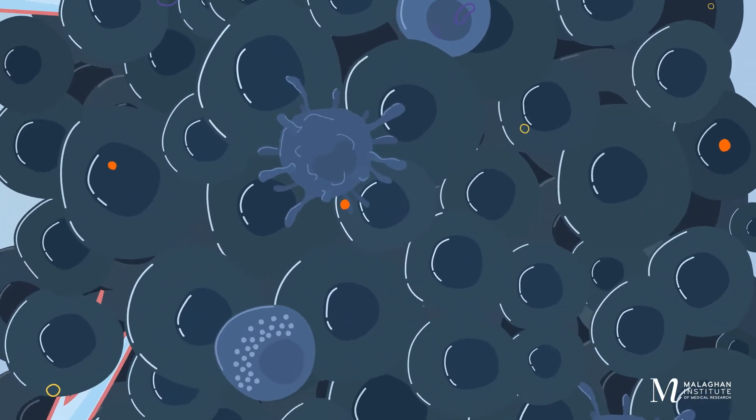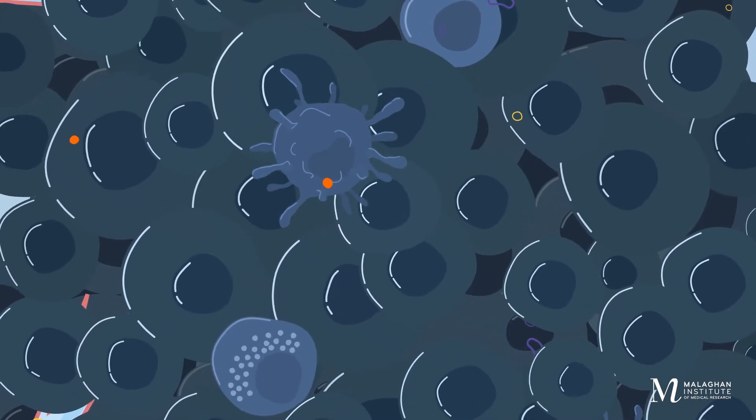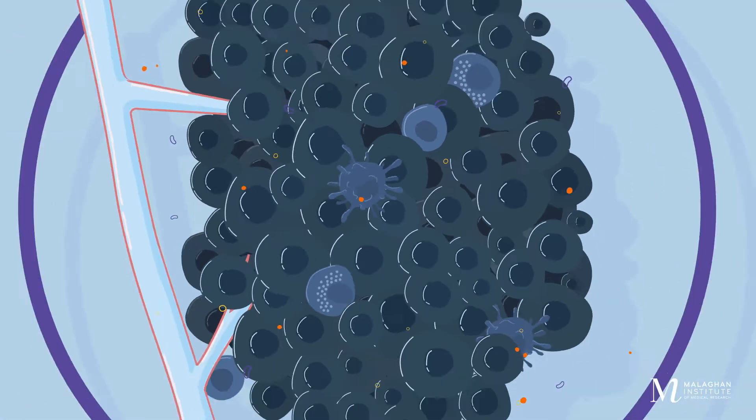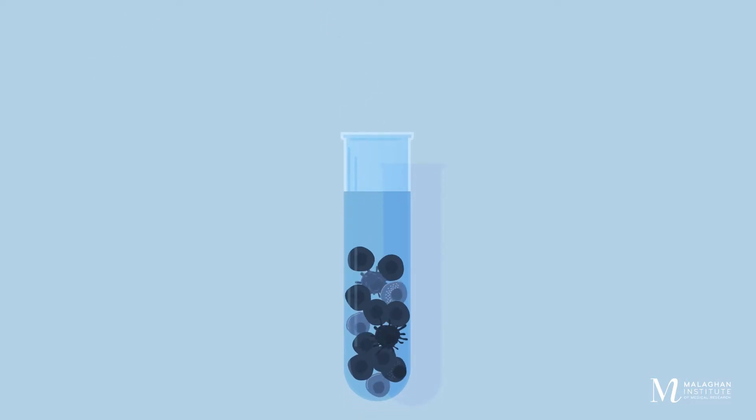Looking down a microscope, it's almost impossible to tell cell types apart, even if we know they're there. To identify different cell types, we can fluorescently label unique traits to get a snapshot of the cells present and what they're doing.